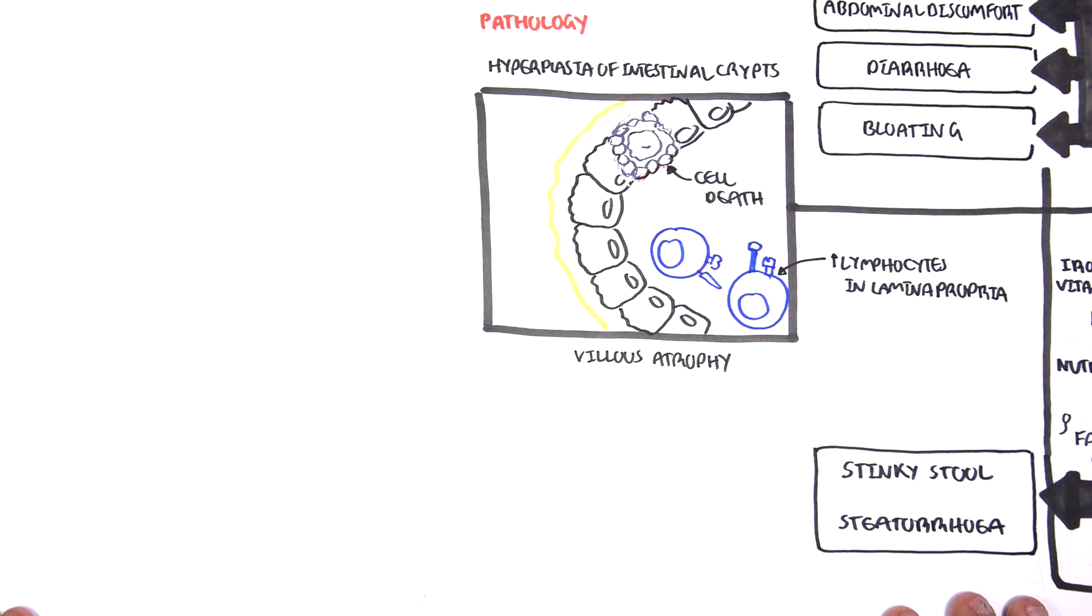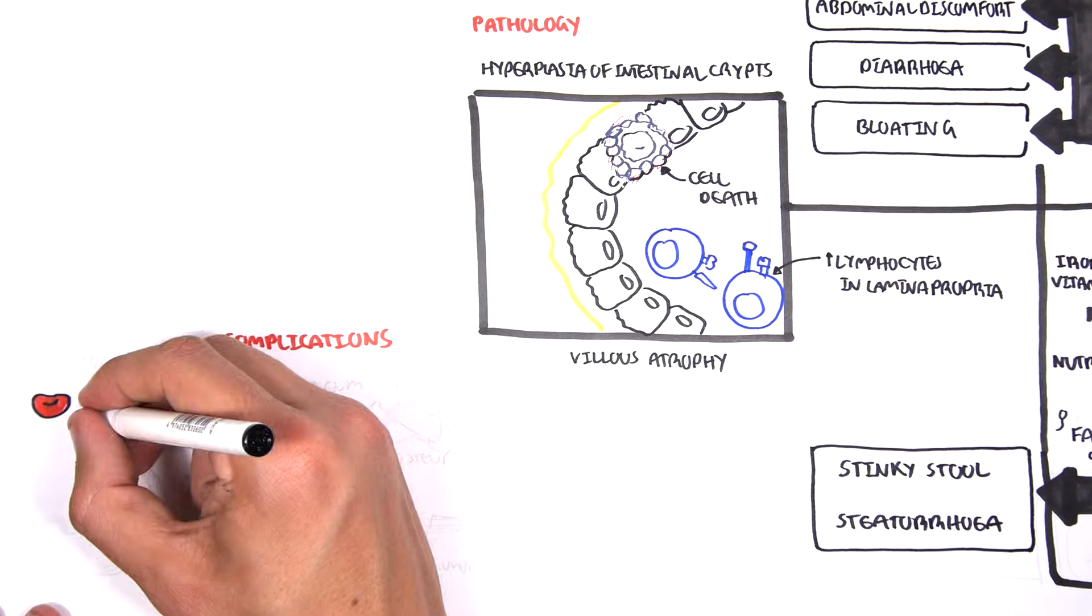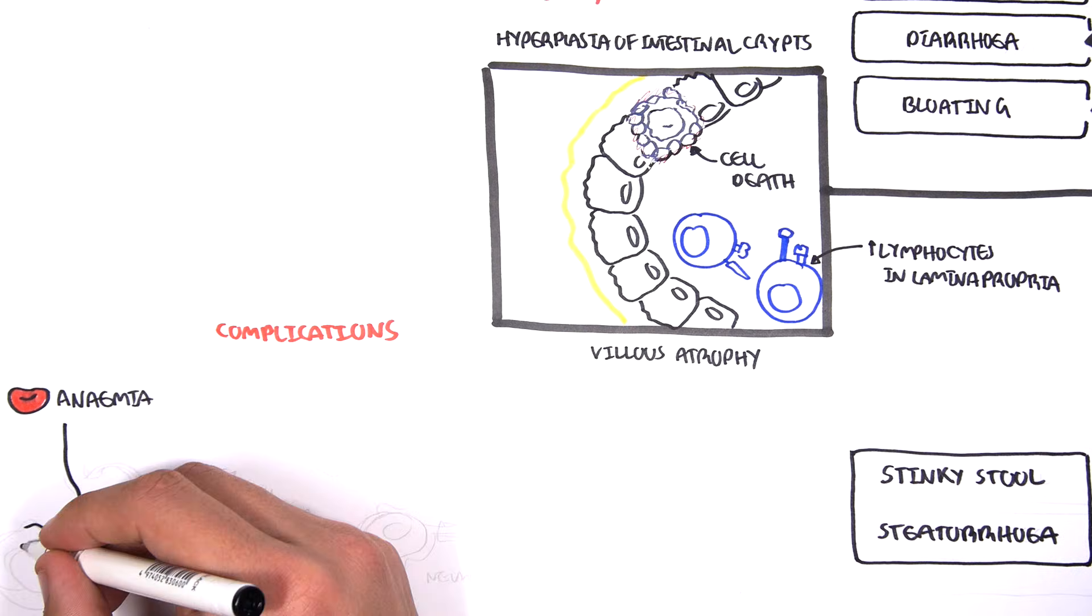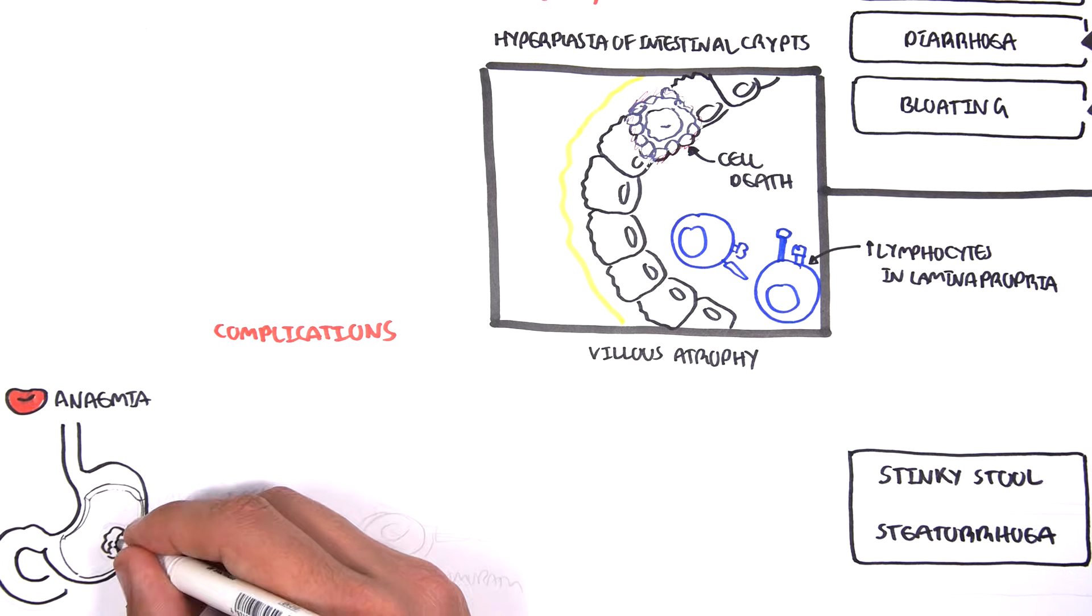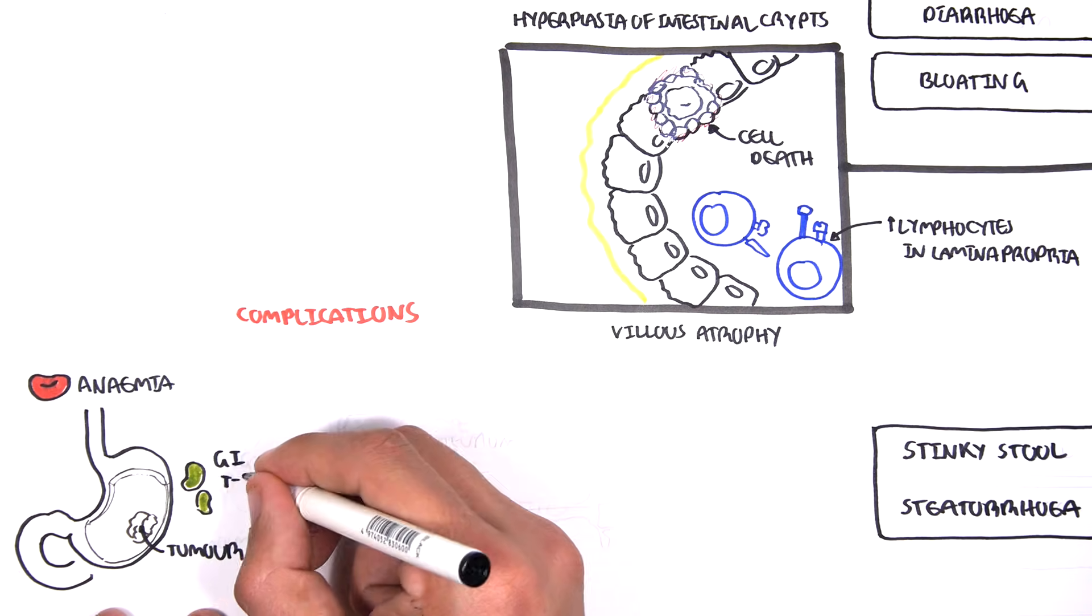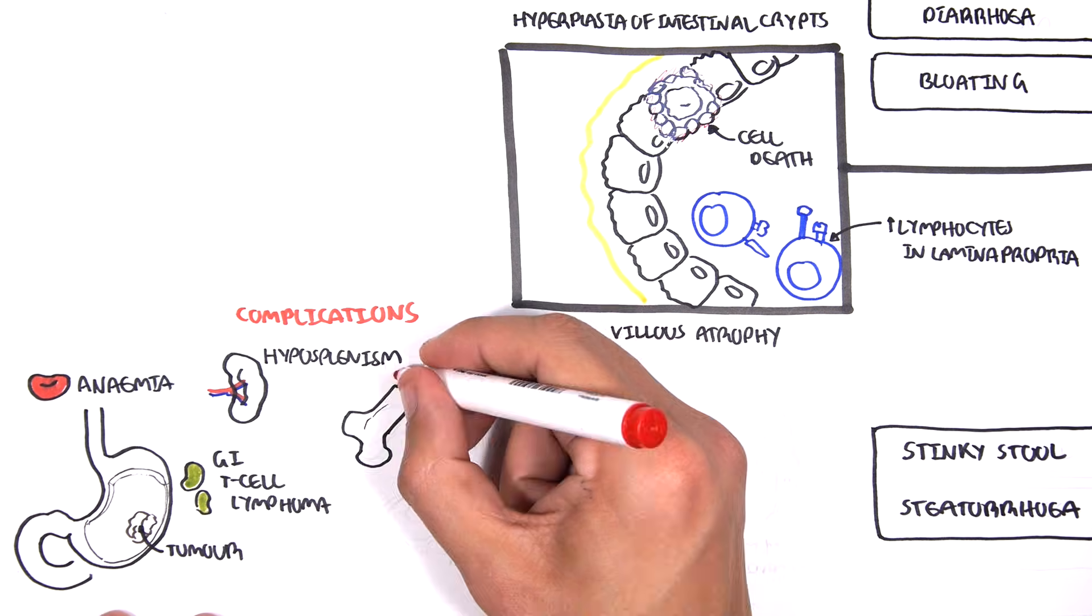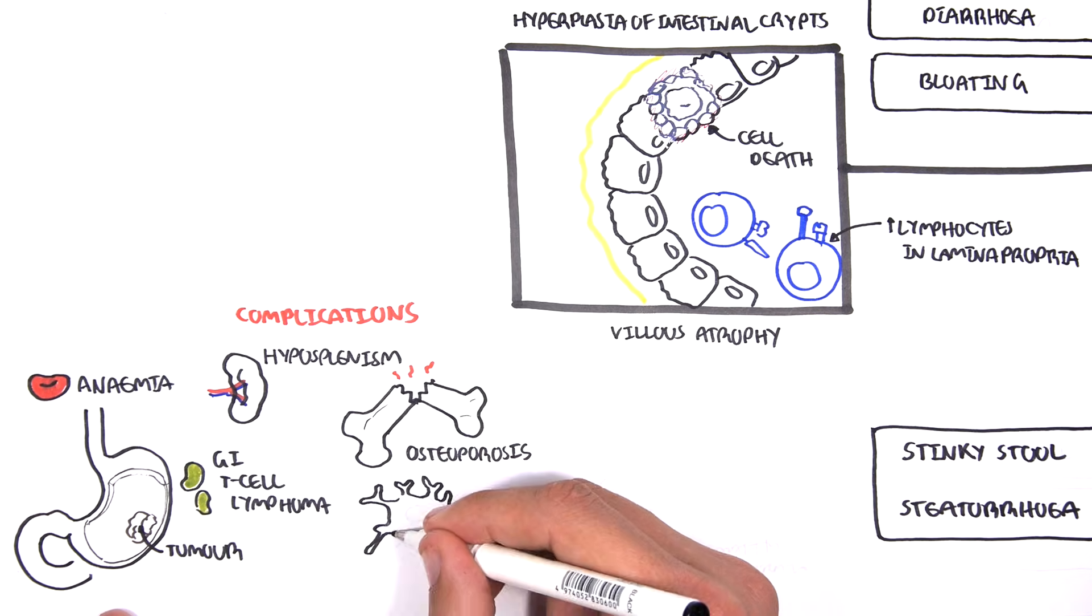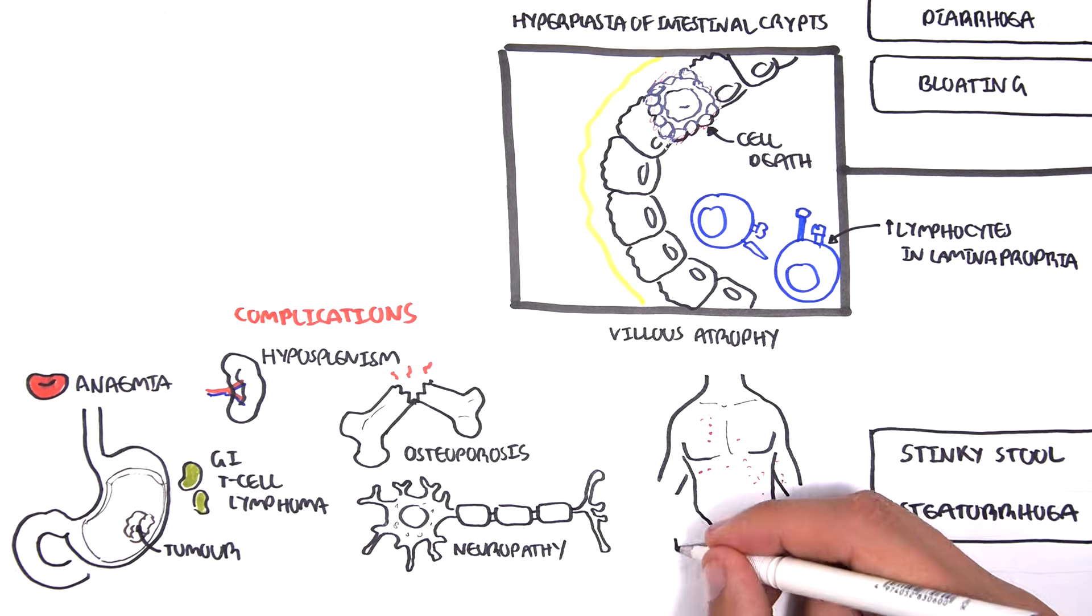Complications of celiac disease can be minor or life-threatening. Complications include anemia, increased risk of developing certain tumors, GIT T-cell lymphomas, hyposplenism, osteoporosis, neuropathies, and dermatitis herpetiformis.